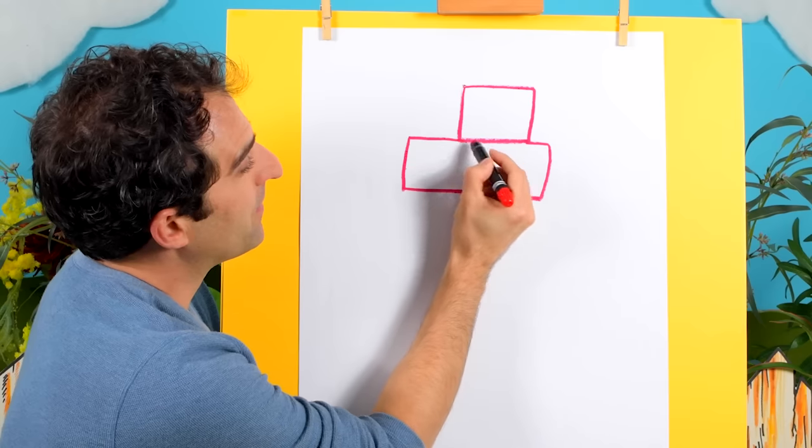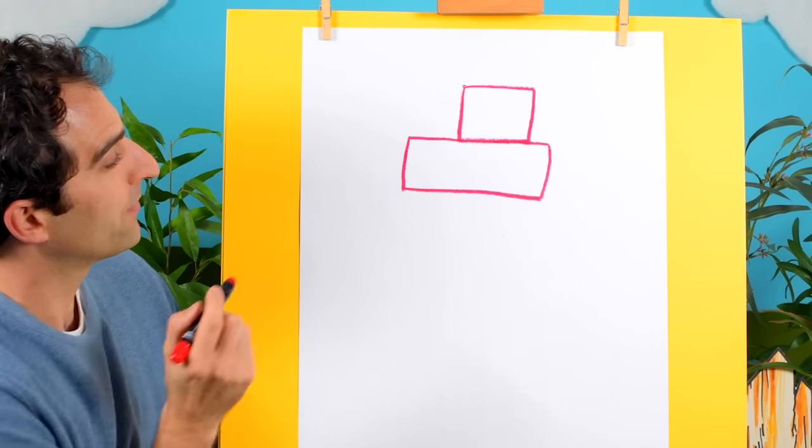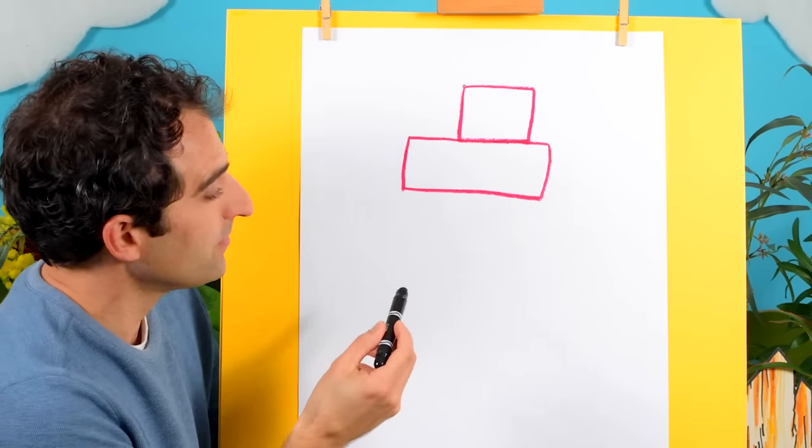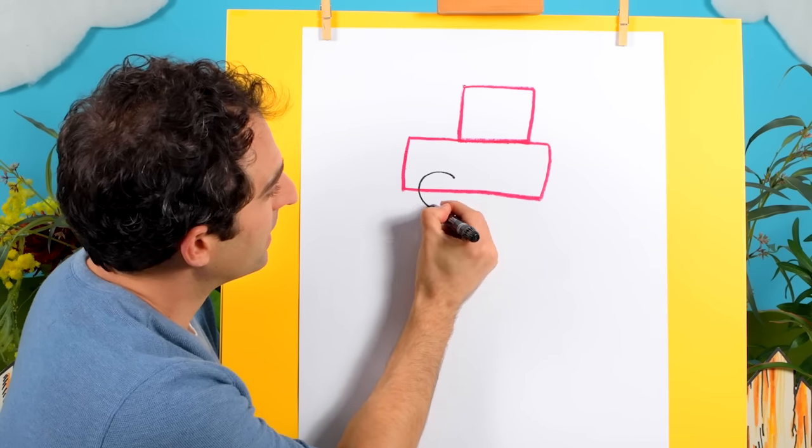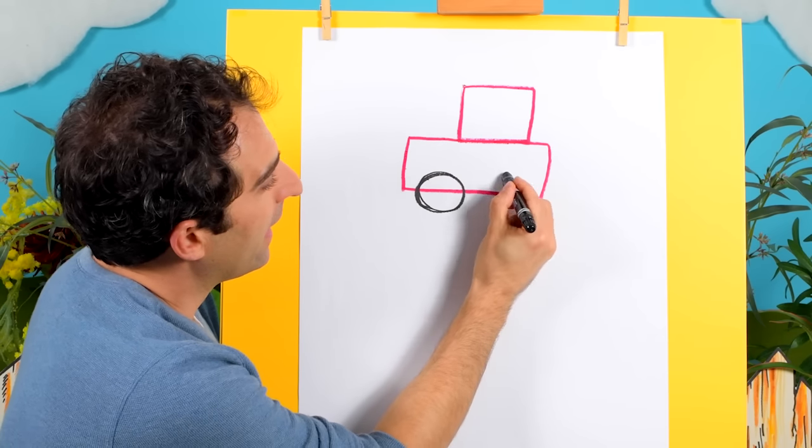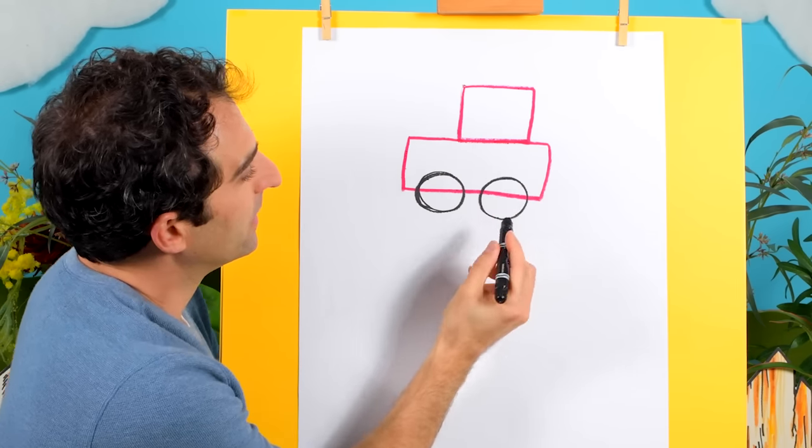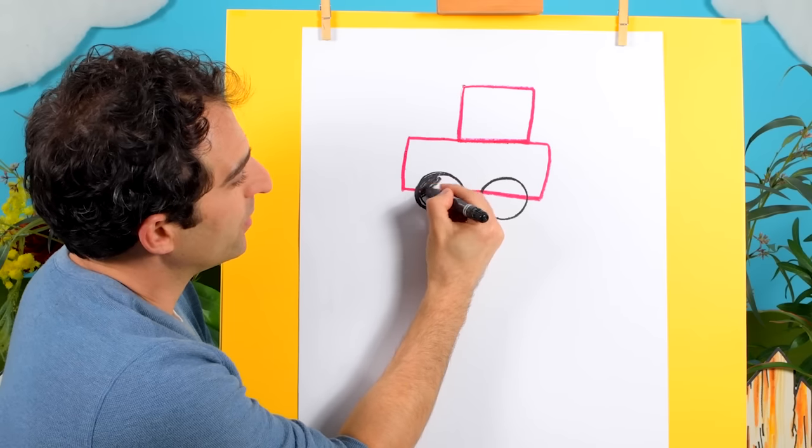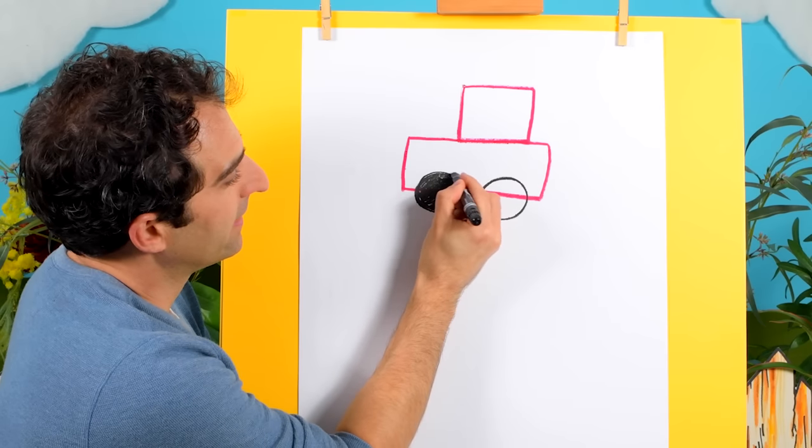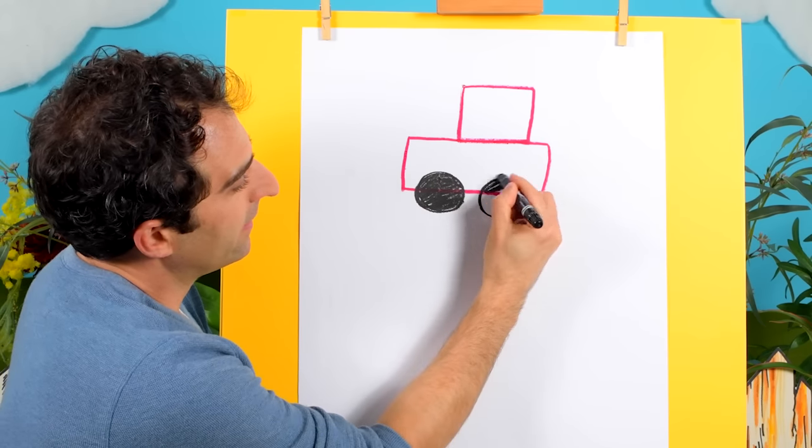Okay, then we can get our black crayon and draw some wheels. There's one wheel, and another wheel, and we can color those wheels in black, just like that. There we go.